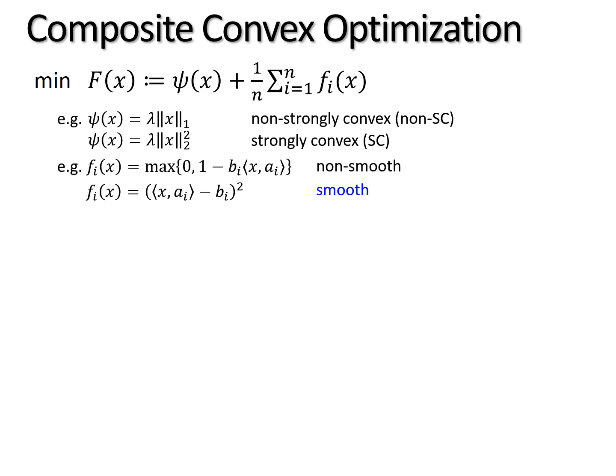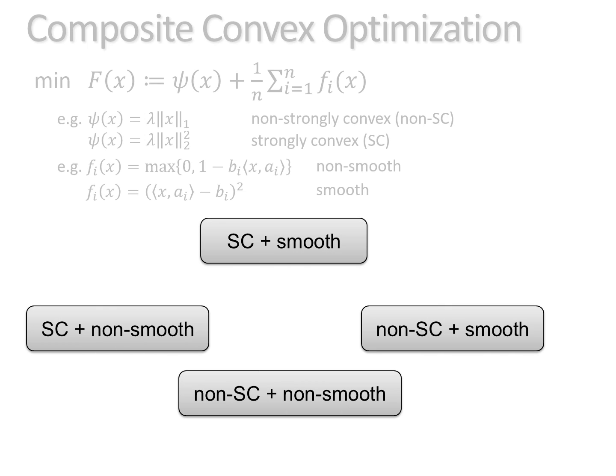Depending on which regularizer and which loss function you have, there are four natural classes of optimization objectives, each of them corresponding to some very famous machine learning problems such as SVM, ridge regression, lasso, and so on.